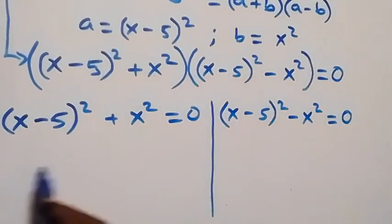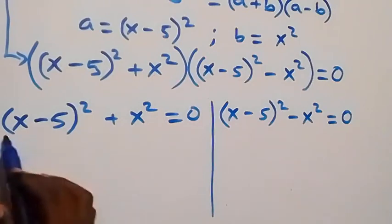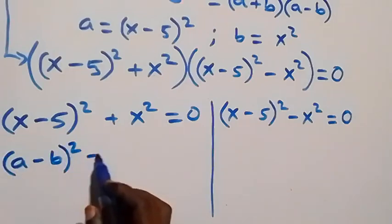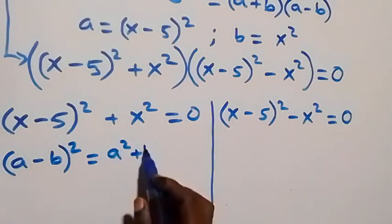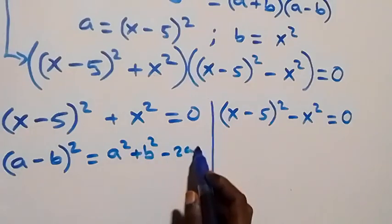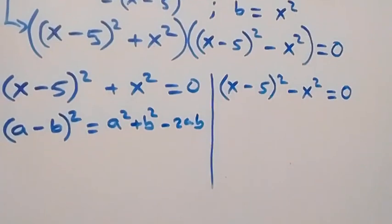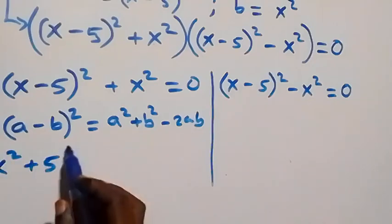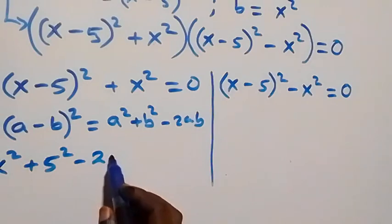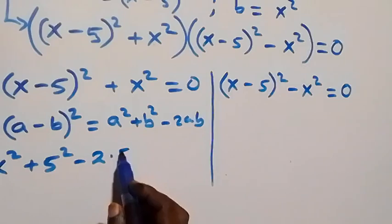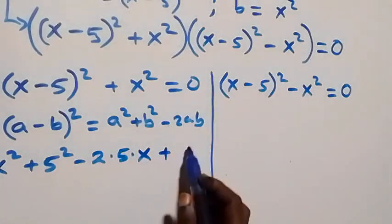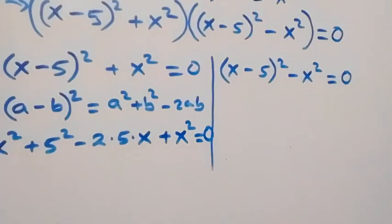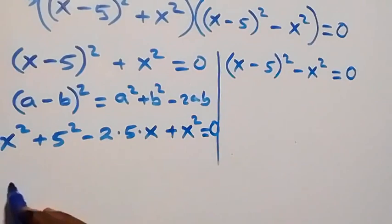When we solve the first case, the expansion follows from (a minus b) squared equals a squared plus b squared minus 2ab. That gives us x squared plus 5 squared minus 2 times x times 5, then plus x squared, which equals to 0.